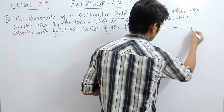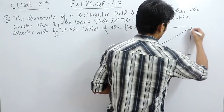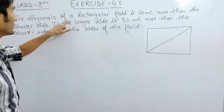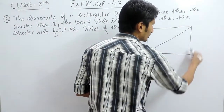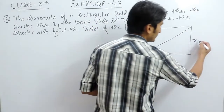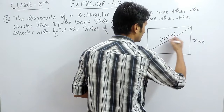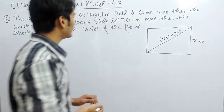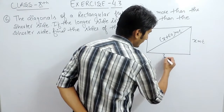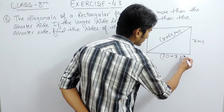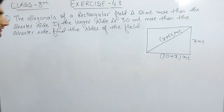Here we are given a rectangular field, and the diagonal is shown. In the question it is given that the diagonal of a rectangular field is 60 more than its shorter side. If the length of the shorter side is x meters, then obviously the diagonal is x plus 60 meters. The longer side is 30 meter more than the shorter side, so the longer side is x plus 30 meters.